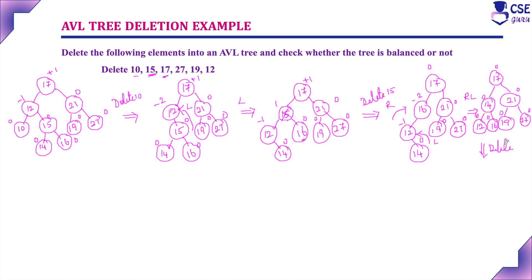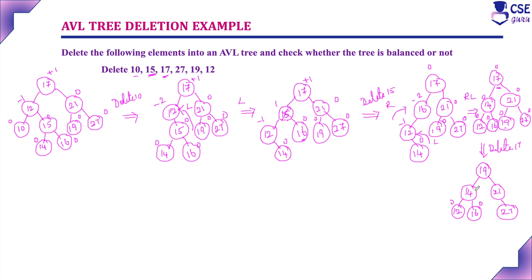Next, delete element 17. Since 17 is the root node, we can replace it with either the inorder predecessor or inorder successor. Here we follow the inorder successor throughout. Inorder predecessor is the largest element in the left subtree and inorder successor is the smallest element in the right subtree. The smallest element in the right subtree is 19. So replace the root node 17 with 19. There are no changes in the left subtree. In the right subtree, 21 remains with its right child 27. So 19 becomes the new root.